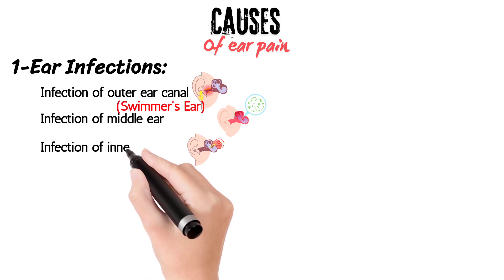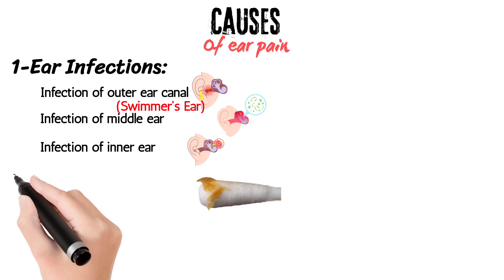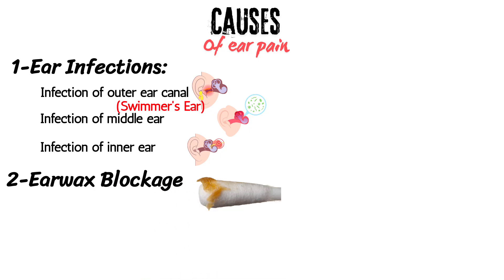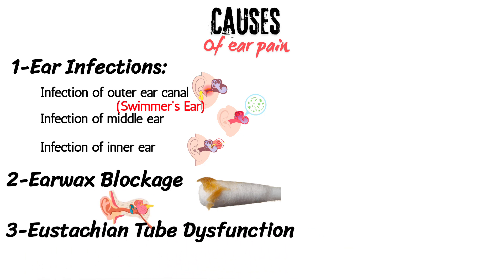Otitis interna is inflammation of the inner ear. Earwax blockage occurs when excessive earwax hardens and blocks the ear canal, leading to discomfort or pain. Eustachian tube dysfunction — this tube helps equalize pressure in the middle ear; if it gets blocked, it can cause pain, pressure, or a feeling of fullness.